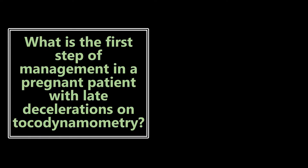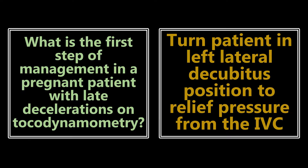What is the first step of management in a pregnant patient with late decelerations on tocodynamometry? Before we do anything else, we want to turn the patient into the left lateral decubitus position to relieve pressure from the IVC. In the third trimester, the growing uterus puts pressure on the IVC — especially when supine — so turning the patient left lateral decubitus gets blood flowing back to the heart.